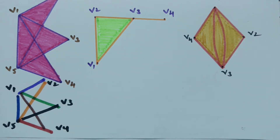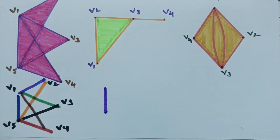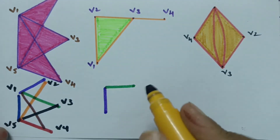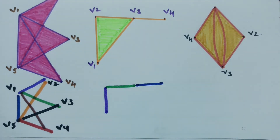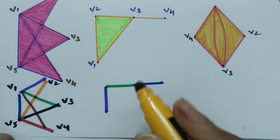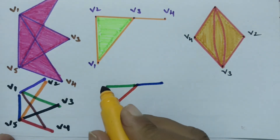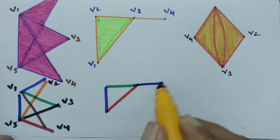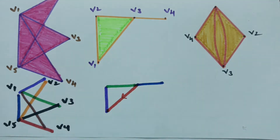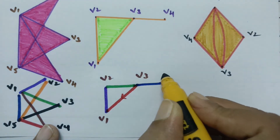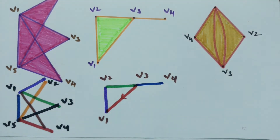Coming to the next graph with four vertices: V1, V2, V3, V4. Starting with V3 to V1, next V1 to V2, V2 to V3 and V3 to V4. Taking this order, we can cover each and every edge once. Therefore it has an Eulerian path.